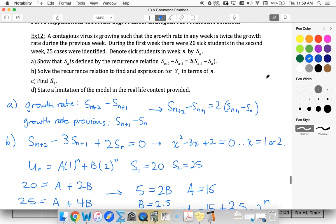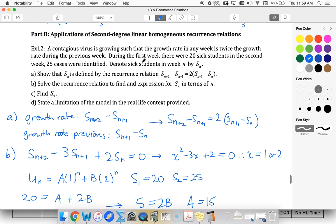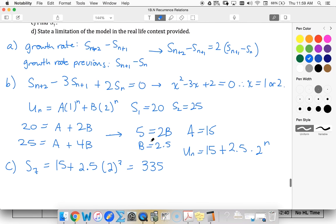So my limitation here, we're talking about sick students. If there are sick students, then my limitation is going to be that I can only use this for a few weeks worth of growth because it's going to be limited to my student population. And that's an example of using second degree linear homogeneous recurrence relations in a real world example.